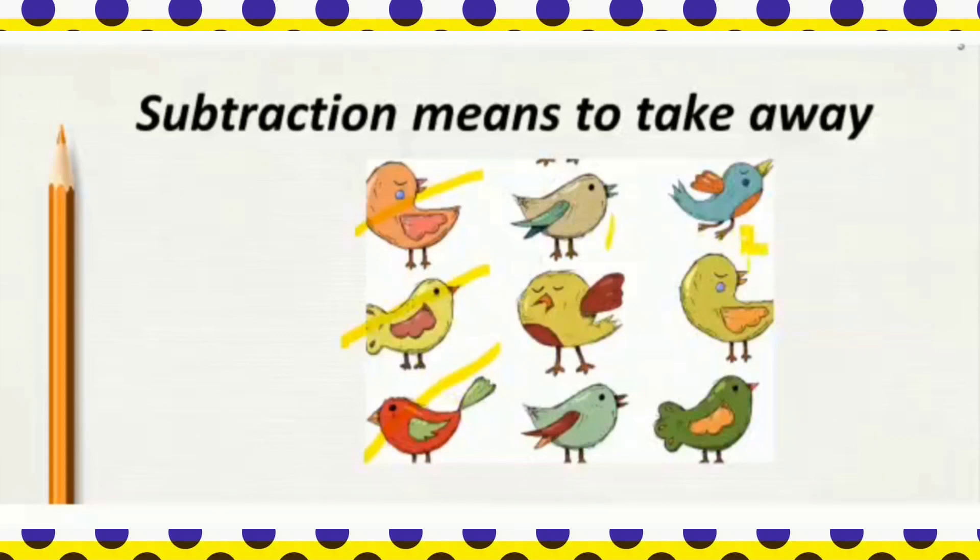1, 2, 3, 4, 5 and 6. So, how many birds are left? 6 birds are left. So, here 9 birds were there. 3 birds flew away. So, 6 birds are left.